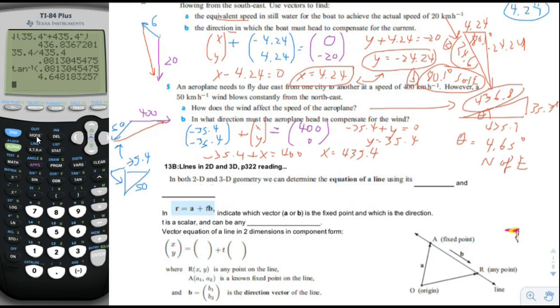Alternatively, the direction could be expressed as a certain number of degrees measured from north rather than from east.